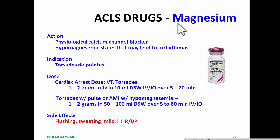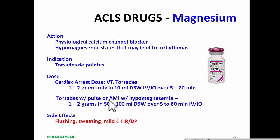Magnesium is useful in patients who have low magnesium levels. It is a physiological calcium channel blocker and has been found particularly useful in patients with torsades de pointes. The dose for torsades-associated ventricular fibrillation is 1 to 2 grams mixed in 10 mL of D5W given over 5 to 20 minutes. In patients with torsades in the setting of acute MI or low magnesium, 1 to 2 grams in 50–100 mL can be given over 5 to 60 minutes. Main side effects include flushing, sweating, and a mild decrease in heart rate and blood pressure.